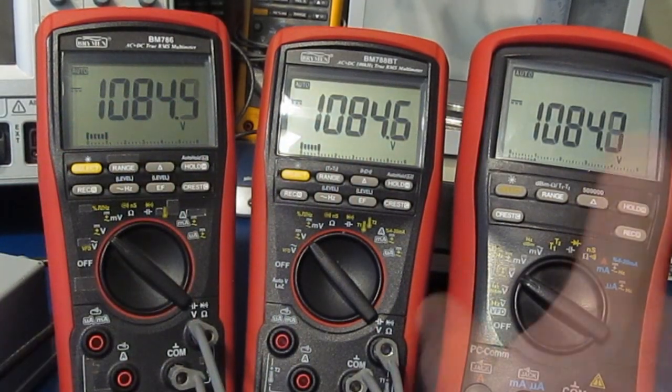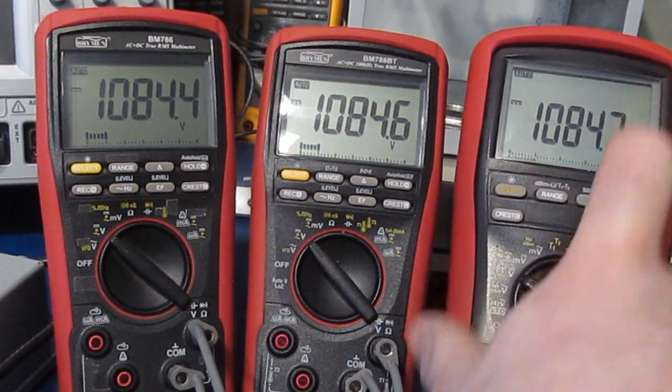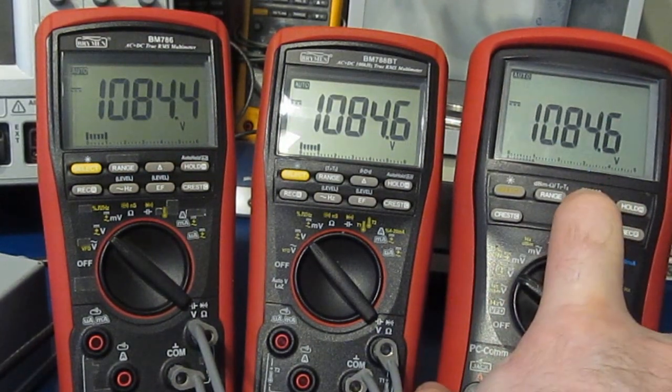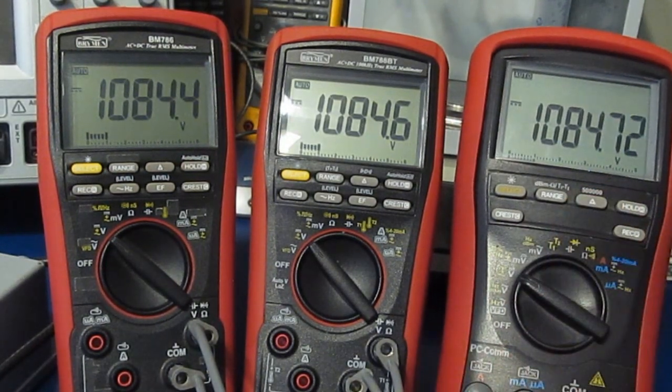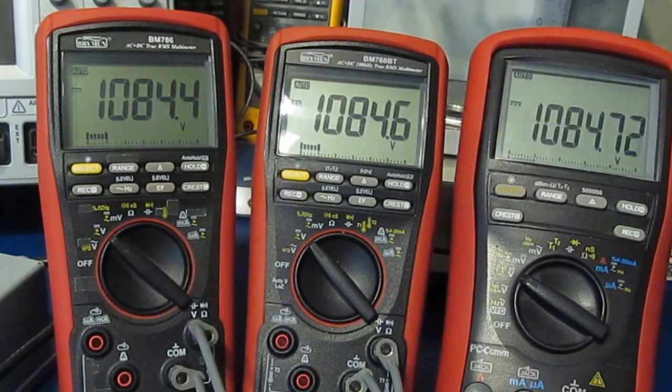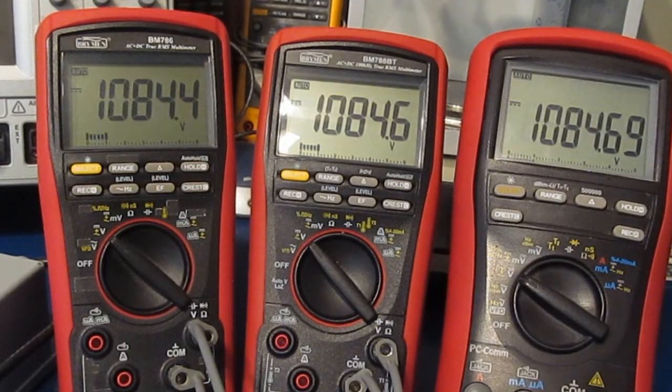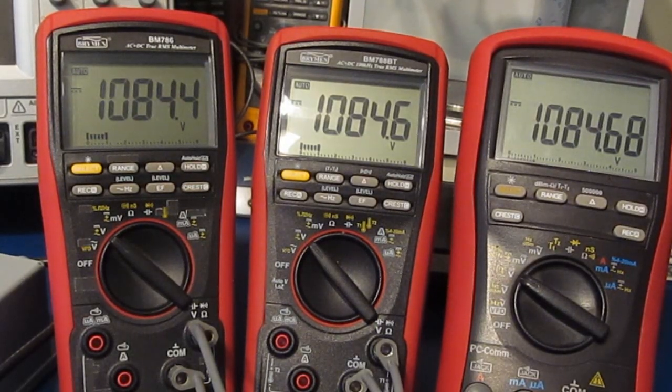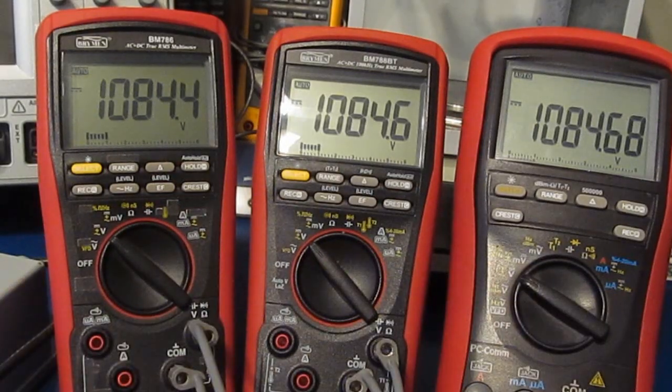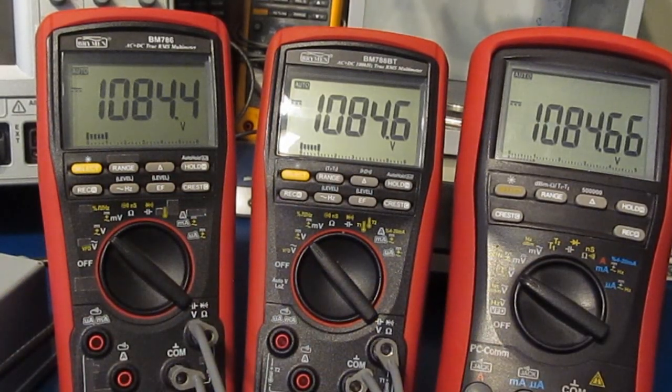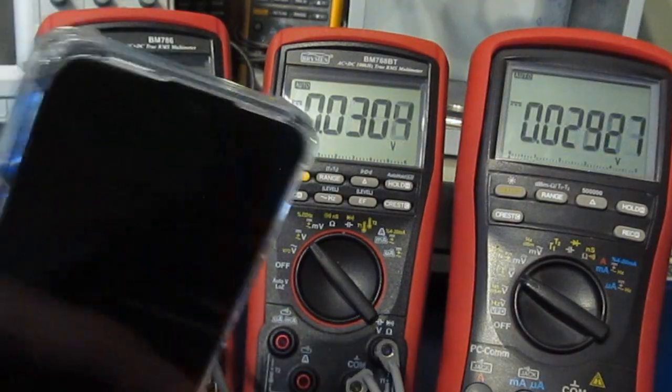Now again, the BM869S offers a 500,000 count mode. You can go ahead and enable that. But there you can see they're not drifting around at all and they basically match.